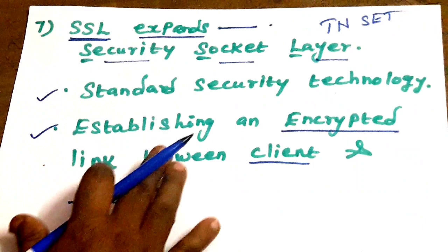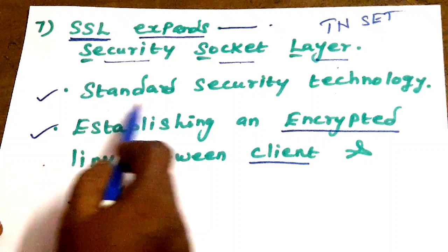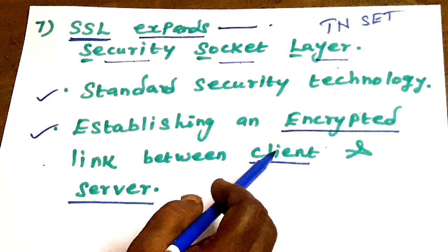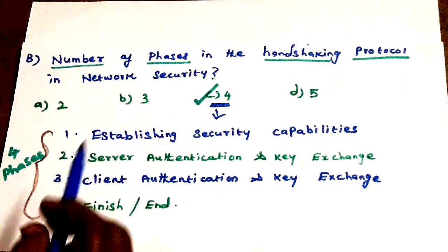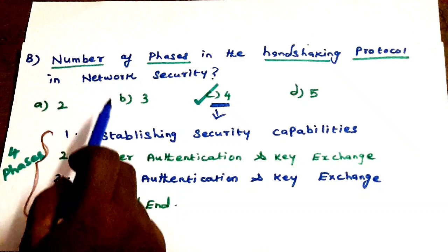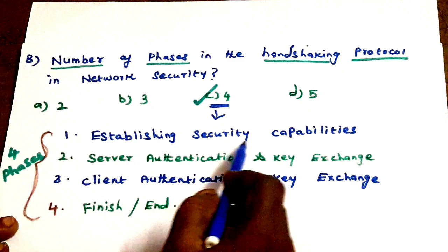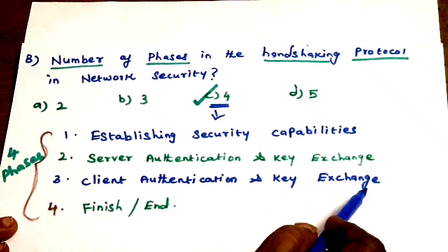Next, a Tamil Nadu SET exam question: It is the standard security technology for establishing an encrypted link between a client and server — very important. The handshaking protocol has 4 phases: first, establishing security capabilities; second, server authentication and key exchange; third, client authentication and key exchange; and last, Finish or End.